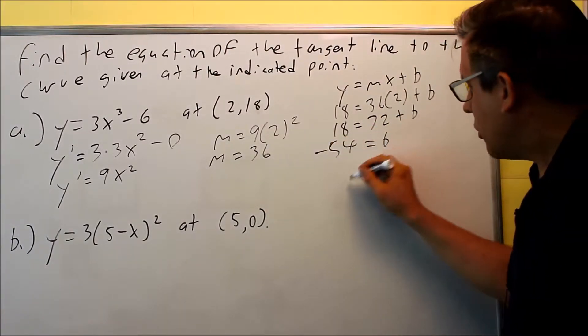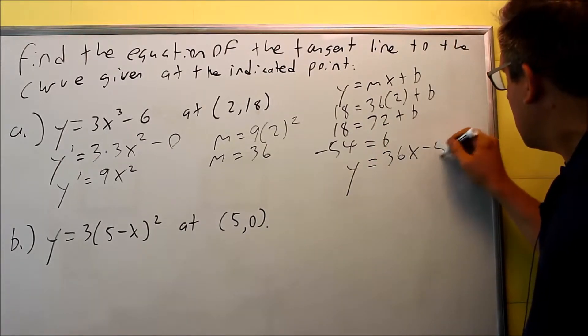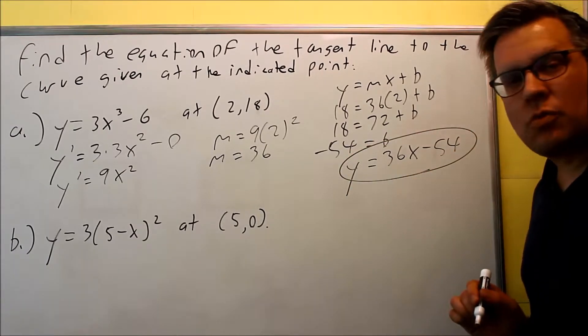We're going to write our answer. Your equation is going to be y equals 36x minus 54. That's for the first one.